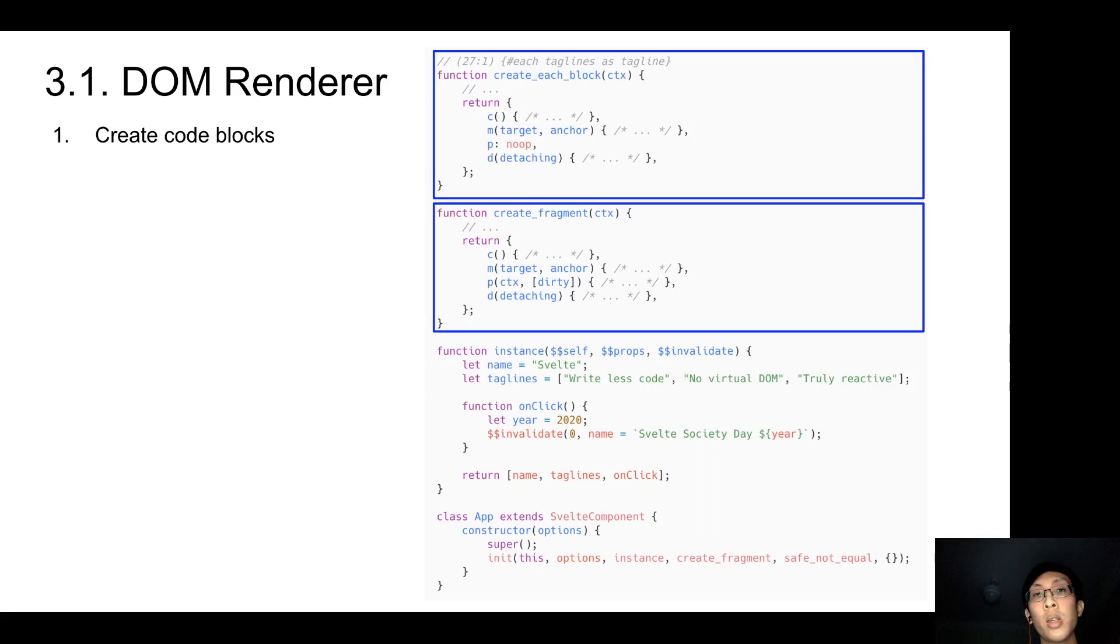If you look closely, you will see multiple fragment code blocks. Usually, a logic block will create multiple fragment blocks. Each fragment block represents an instruction on how to create, mount, update and destroy the nodes within the fragment.